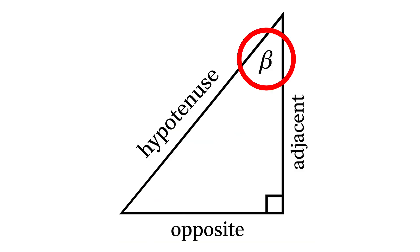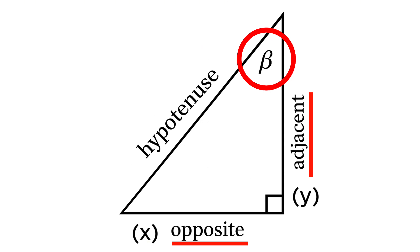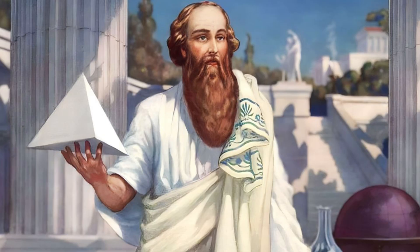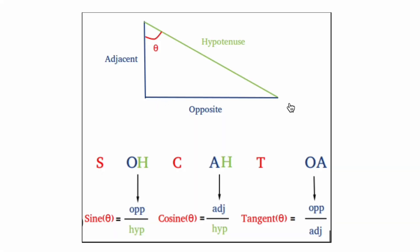For this we can use SOH CAH TOA — sine, cosine, and tangent. The sine of this angle is the opposite divided by the hypotenuse, the cosine is the adjacent divided by the hypotenuse, and the tangent is the opposite divided by the adjacent. The opposite is going to be the x and the adjacent is going to be the y. We could get the hypotenuse using the Pythagorean formula, but we don't need to — using tangent is way easier.